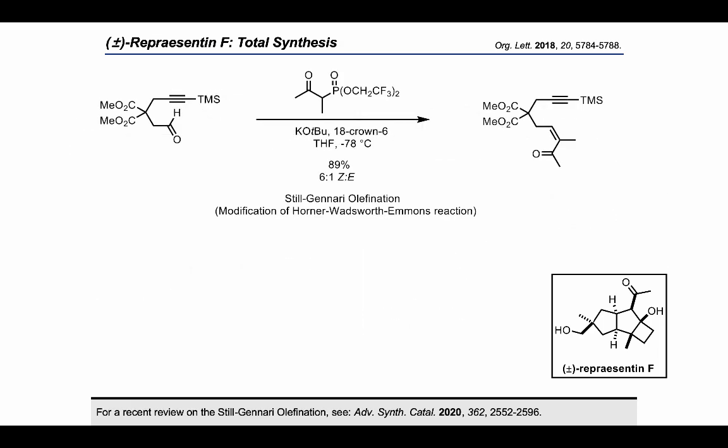In order to obtain the Z-configured olefin of the enyne, we applied the Still-Gennari modification of the Horner-Wadsworth-Emmons olefination. This reaction proceeds under kinetic control conditions, favoring the formation of the Z-configured alkynes. It requires the use of a phosphonate with electron-withdrawing groups, such as trifluoroethyl, together with strongly dissociating conditions, for example potassium tert-butoxide and 18-crown-6 in THF. In this way, the desired enyne, being predominantly the Z-isomer, was obtained.